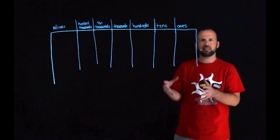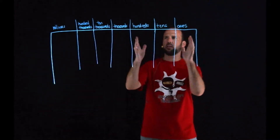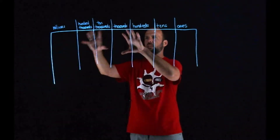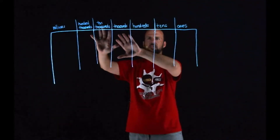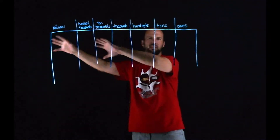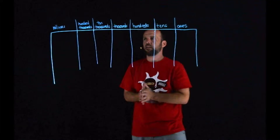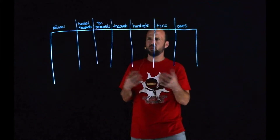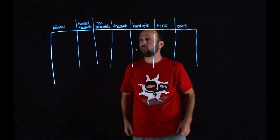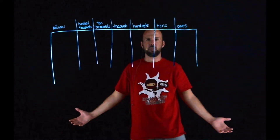Now in previous lessons we practiced with reading numbers, especially when we were taking a look at the periods — those hundred thousands, ten thousands, thousands place, and millions and stuff like that. We learned about how those periods can help us read numbers better. But we're going to work with that a little bit more and learn how we can write numbers in expanded form. So again, more place value practice — can't get much better than that, right?